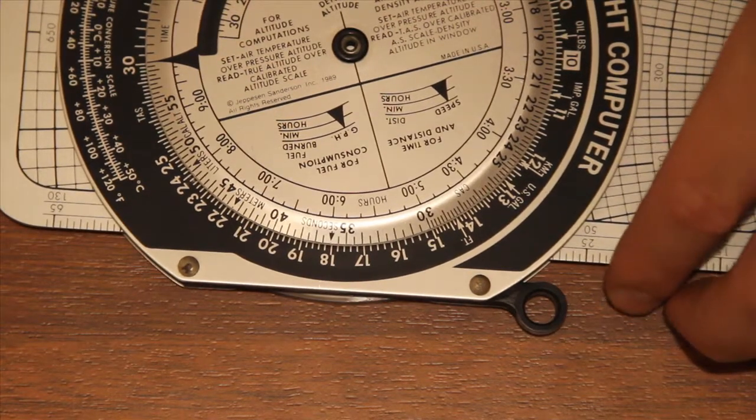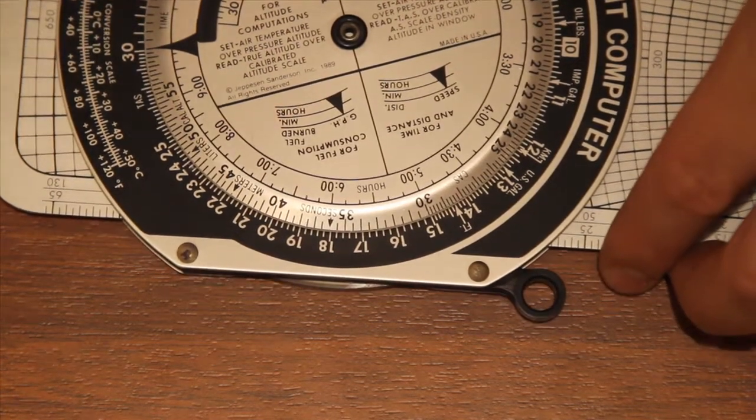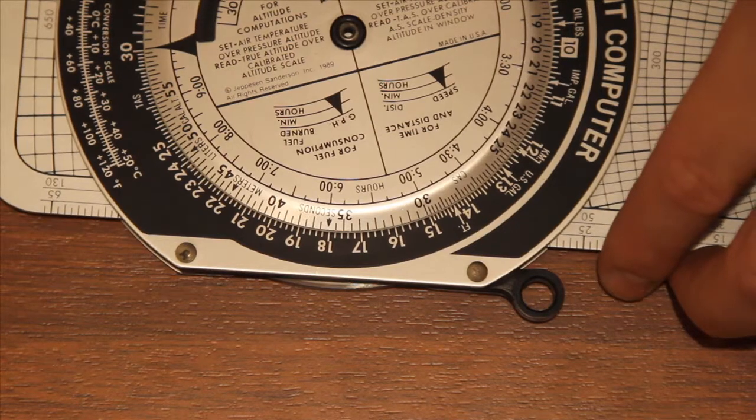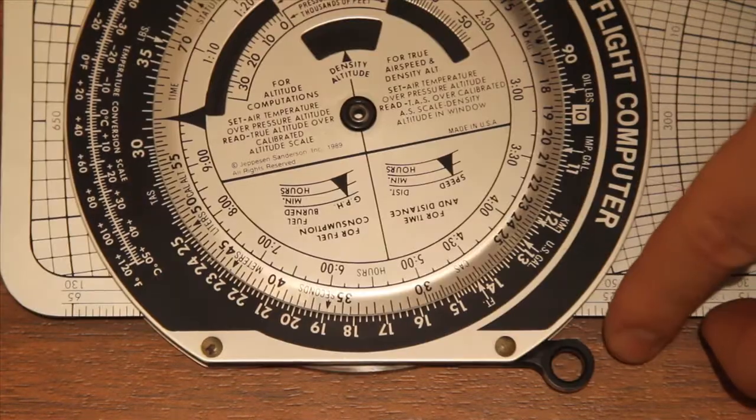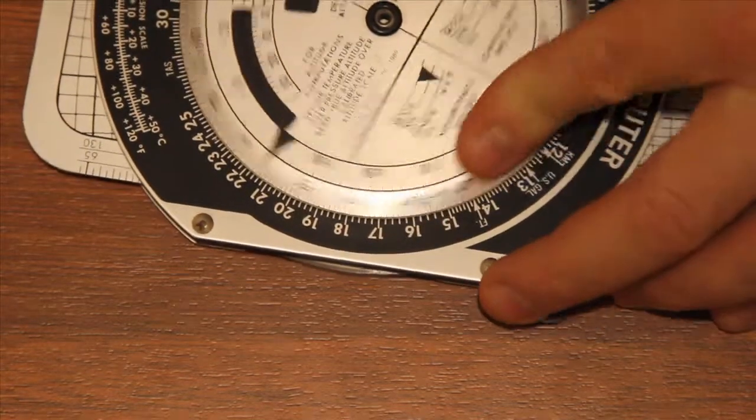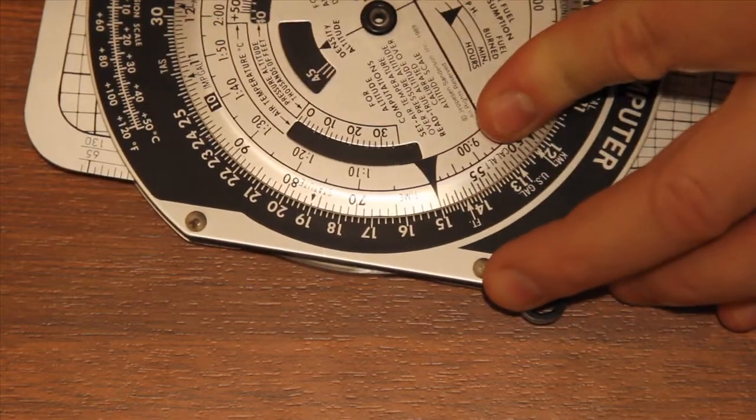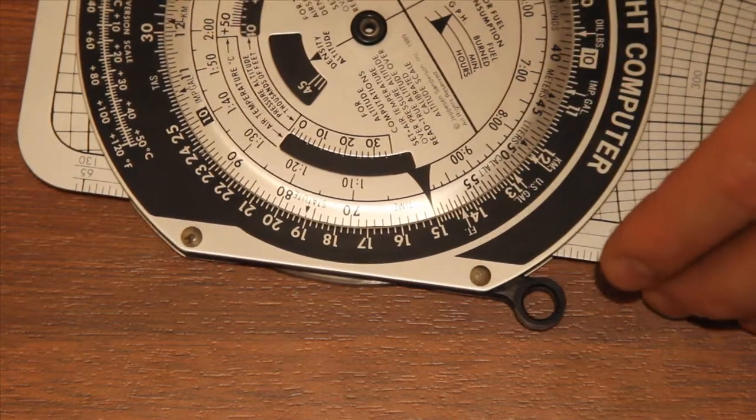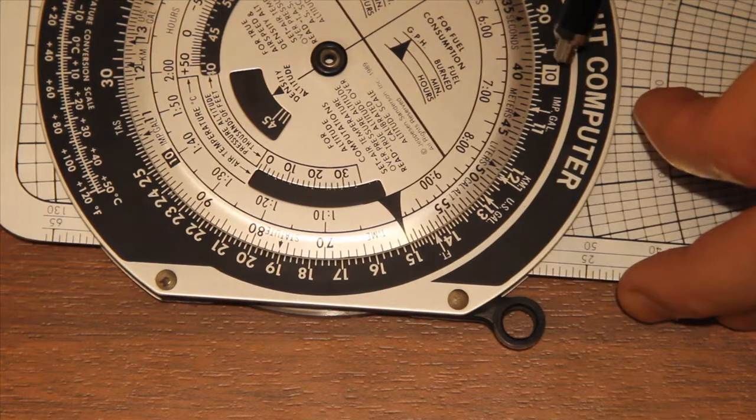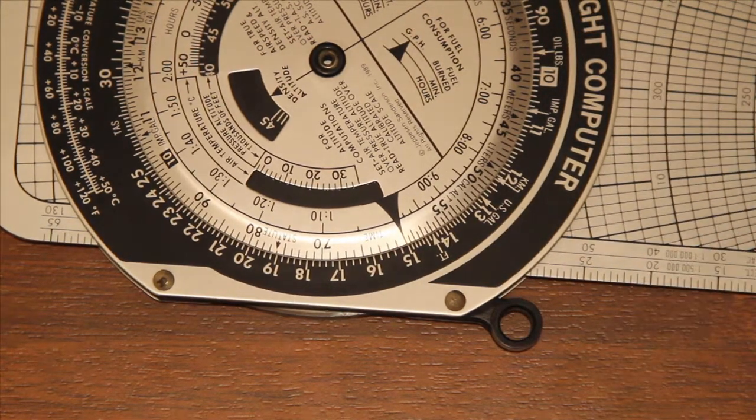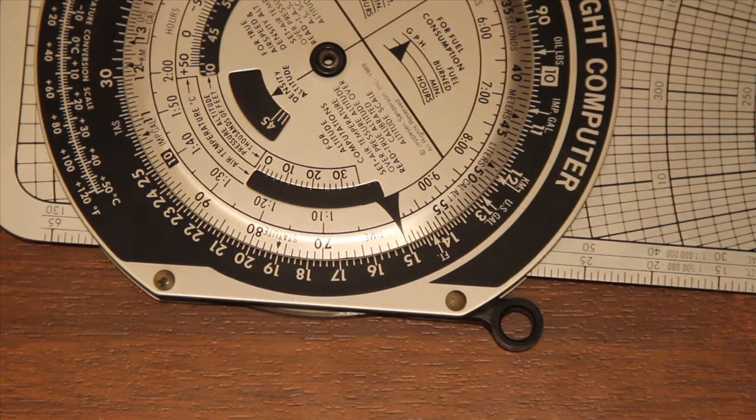Similarly, if we do 25 times 4, we move the 10 around to the 25 like so, and then we read the number 4 off the inner scale, and you can see that the answer is 100. So it's very simple.